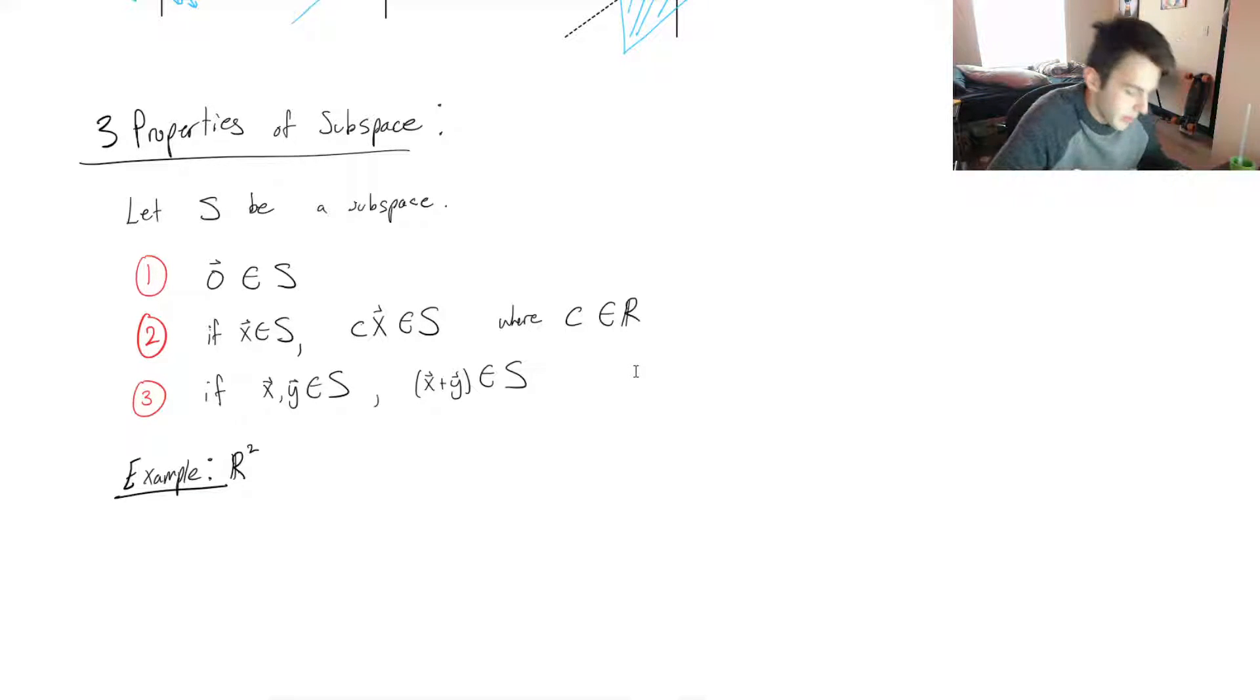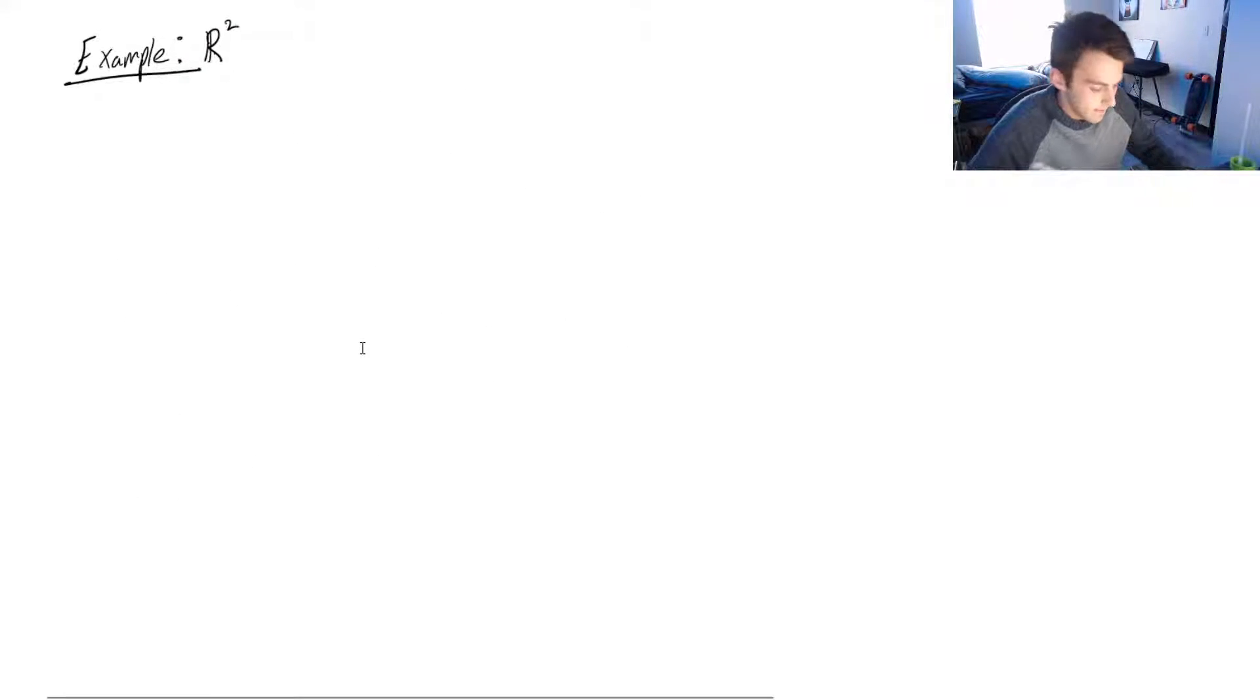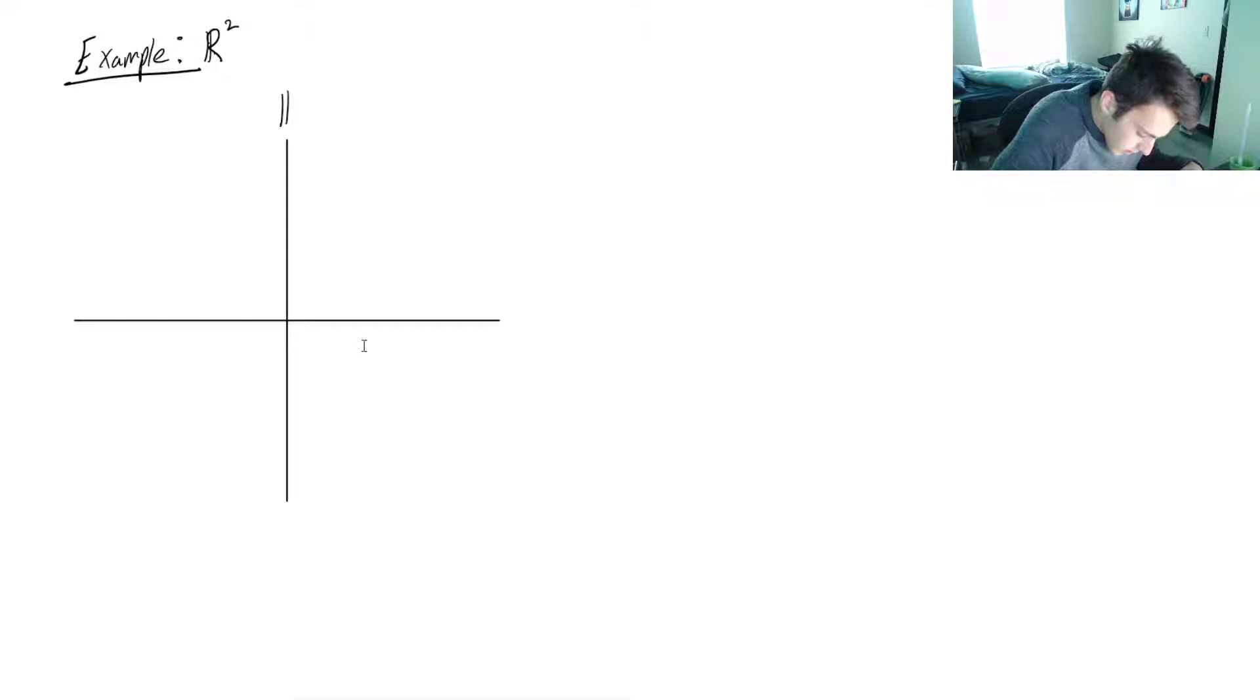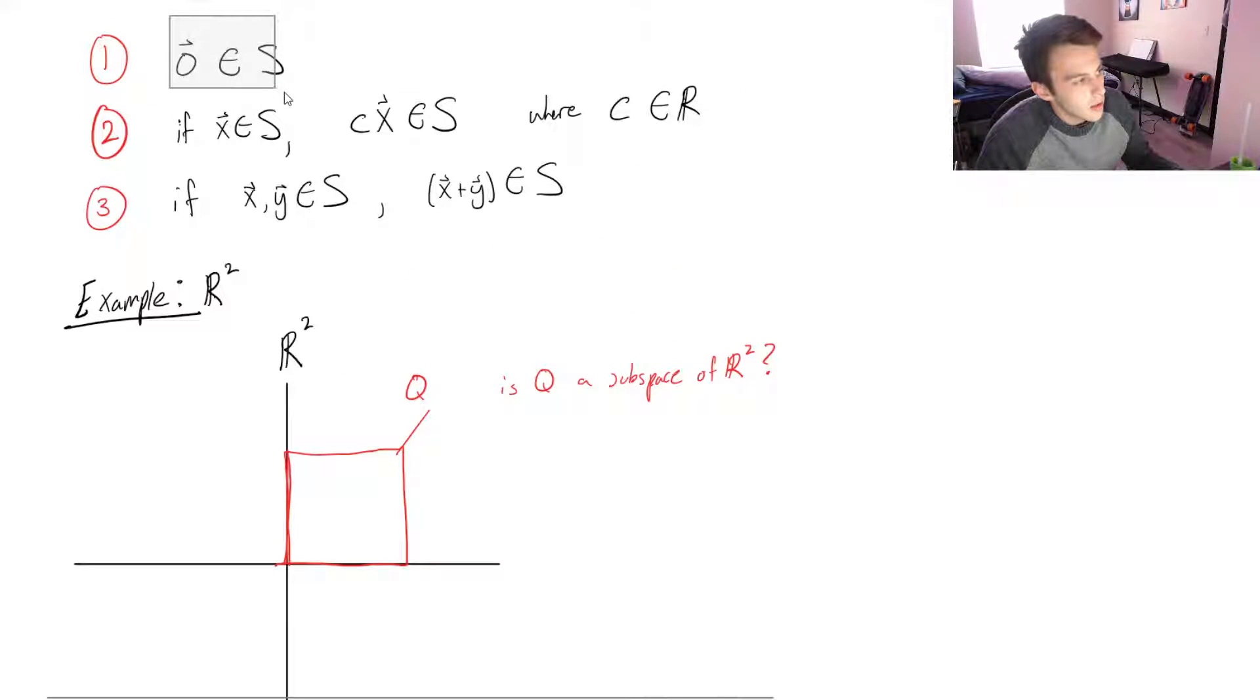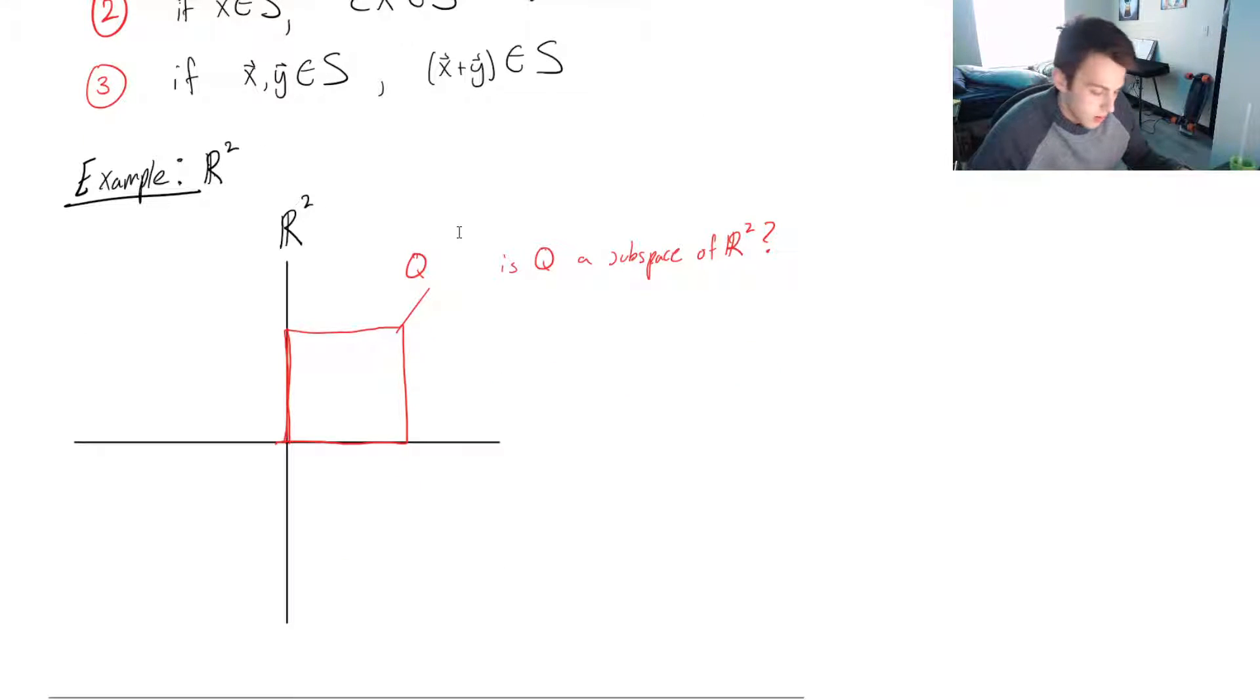So let's break it down into a smaller dimension, R². So this entire sheet, this coordinate axis, is R². And I'm trying to figure out, let's say, I want to figure out if this plane right here, this region. Let's call this Q. So is Q a subspace of R²? So number one, is zero in this subspace, in this case Q? Well, zero is right here, right on the line. So the first one is true.